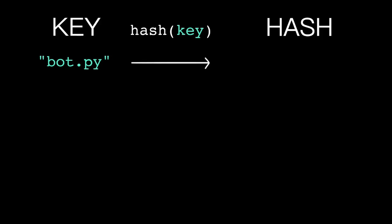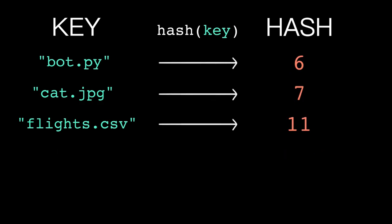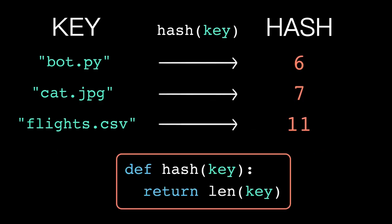Now, Python uses a sufficiently complex and well-studied algorithm for its hash function that works on any immutable data type. But for now, let's assume something a bit simpler, so it's easier for us to trace. Let's say our simplified hash function that only works on strings just returns the length of the key.